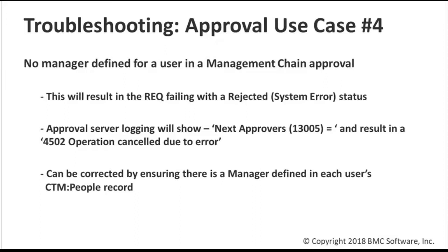This one is pretty straightforward: there's no manager defined in somebody's people record when you're using a management chain approval. Approval server debug logging will show that there's no next approvers found, resulting in 'operation canceled due to error,' and it's going to go to rejected. To correct this, make sure that if you're using a management chain approval, anybody utilizing that rule has an approver defined in their people record. I've seen a case where a customer knew all people didn't have managers defined — they actually created another rule to run off rejected to handle that scenario, which is another option if not everybody has a manager defined.